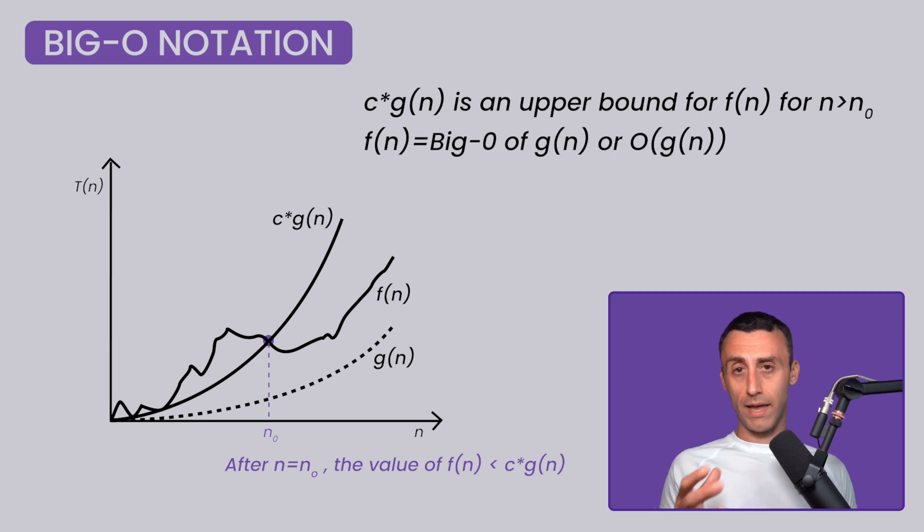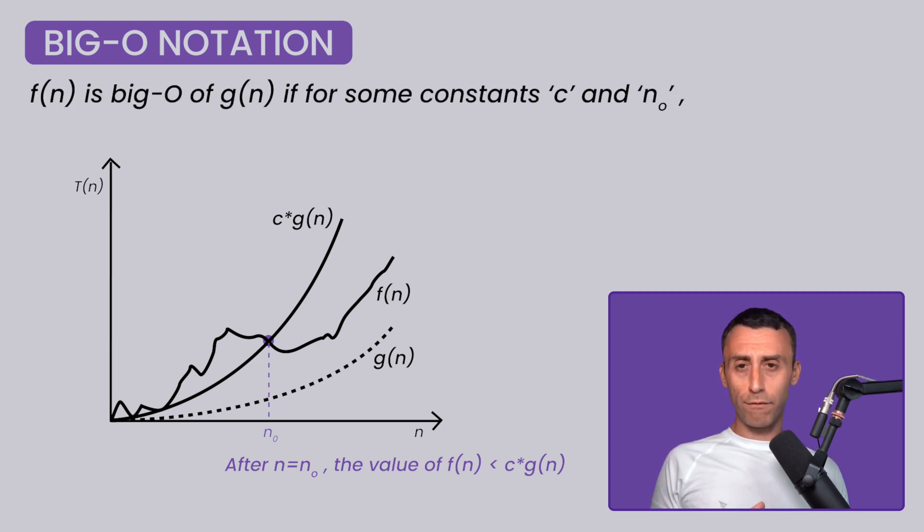And this is just alternatively written as f of n equal big O of g. To formally write this, we can say f of n is big O of g if for some constant c and n0, f of n is less than c multiplied g of n for all n greater than n0.